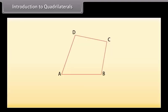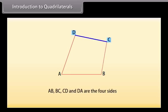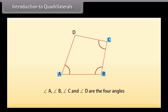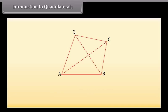Introduction to quadrilaterals: Look at the figure ABCD. This is a quadrilateral. A quadrilateral has four sides, four angles, and four vertices. Here AB, BC, CD, and DA are the four sides. Angle A, angle B, angle C, and angle D are the four angles, and A, B, C, and D are the four vertices. If we join its opposite vertices — A to C and B to D — we get the diagonals. So AC and BD are the diagonals.